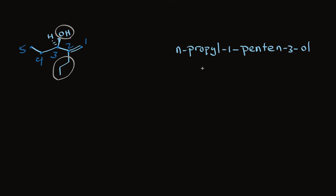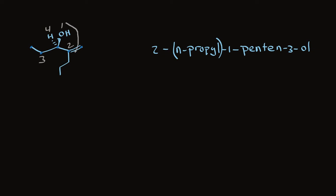The n-propyl substituent is on carbon 2, and the hydroxyl group is on carbon 3. So we have 2-(n-propyl)-1-penten-3-ol — we use parentheses for the n-propyl group because it has its own hyphen. For stereochemistry, hydroxyl is highest priority and hydrogen is lowest. The carbon with a double bond and other substituent is second priority over the CH2, which is third. Going clockwise, we call this R. The full name is R-2-(n-propyl)-1-penten-3-ol.